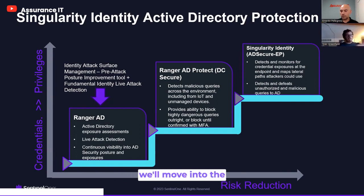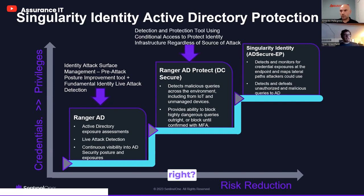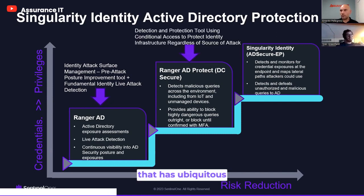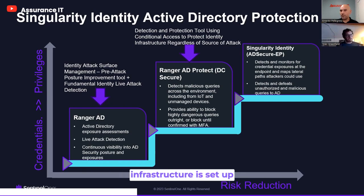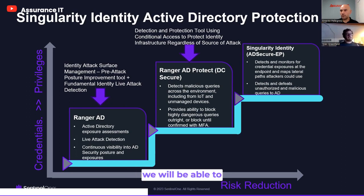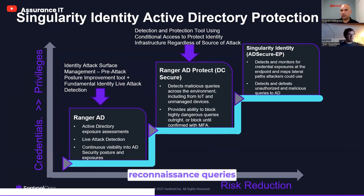From there, we'll move into Ranger AD Protect. This is where we start installing an agent on the domain controllers that has ubiquitous visibility. Think about that IoT attack scenario — somebody compromises that device and starts using it to try and understand how your infrastructure is set up so they can target it. From the Ranger AD Protect perspective, we will be able to detect and even mitigate a lot of those reconnaissance queries and prevent attackers from getting access to that information.